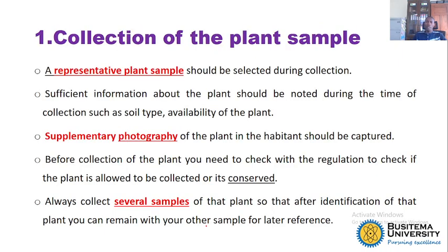When collecting a plant for identification, that plant should be representative, meaning it should contain all its parts — for example, the roots, leaves, fruits, and seeds. You must also take a supplementary photograph using your phone or camera. The reason is that by the time you finish preparing the sample, the plant will be dry, and the color may be important or required by the botanist to distinguish between species.